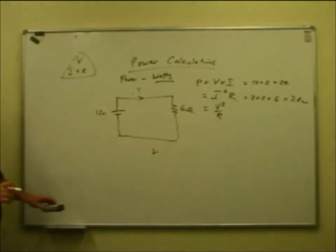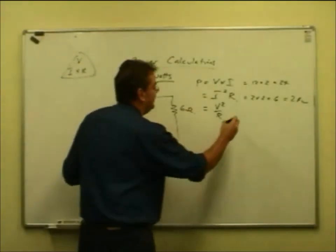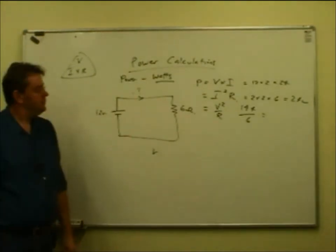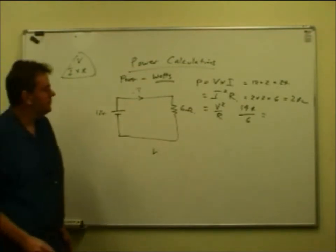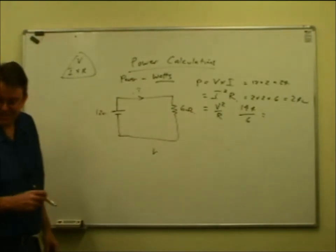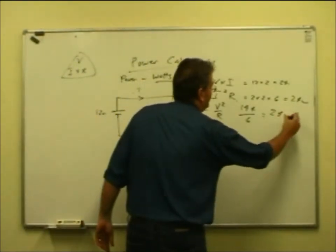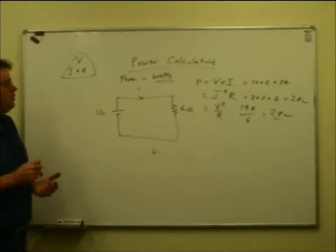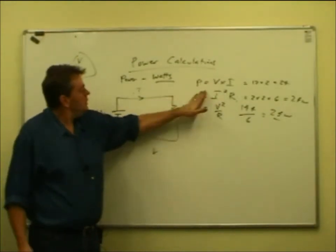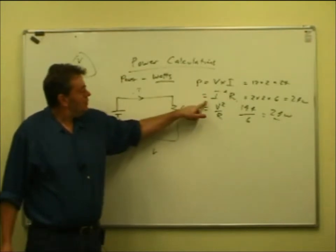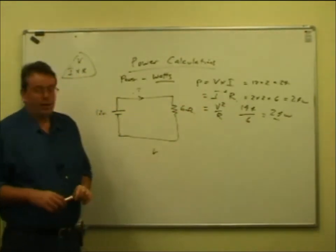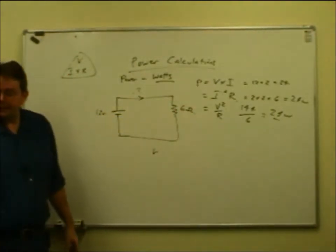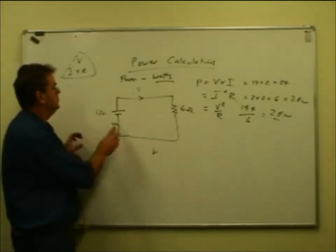What's the voltage? 12. What's 12 times 12? 144. It's equal to 144 divided by 6 = 24 watts - same answer. So there are three formulae: if you know voltage and current, use V×I. If you don't know the voltage but know current and resistance, use I²R. If you don't know the current, use V²/R. All give the same answer - it's just Ohm's law substituted back into the power calculation.